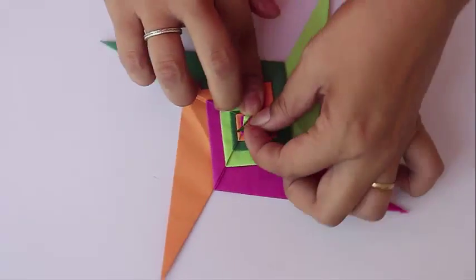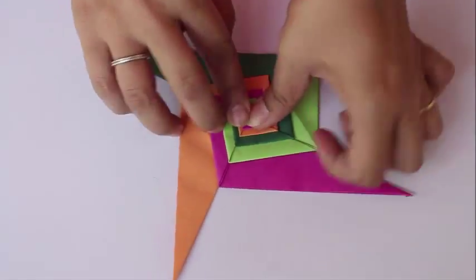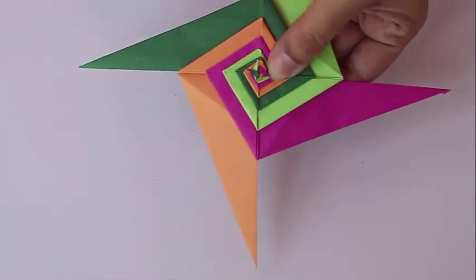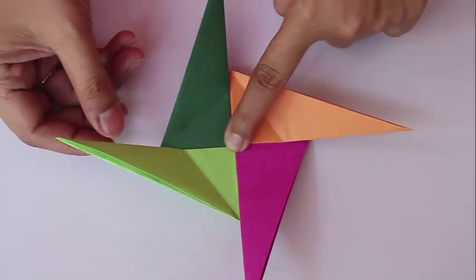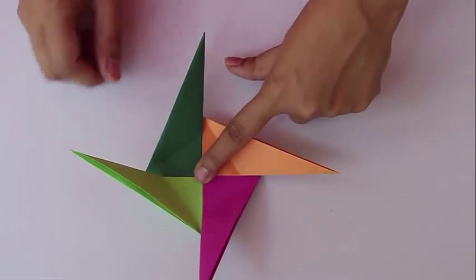Once you are done with this, turn the paper over and start by folding exactly like the other side. The first creases, the initial creases are already there.